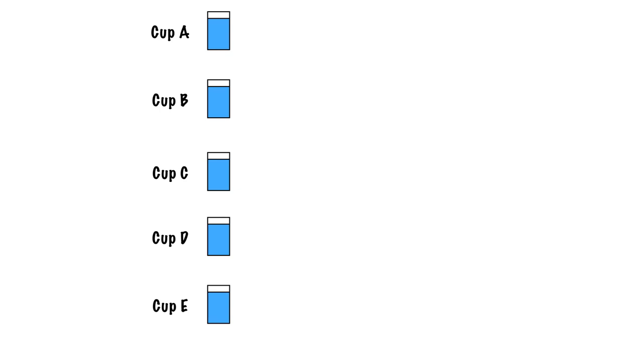A great place to start is with these different cups. We have cup A, B, C, D, and E. Each one of these cups is going to have a different temperature. We're going to first present a reference cup — in this case we're going to use cup C as our reference point, and it's going to be around room temperature. Cup B and A are going to be above room temperature, and cup D and E are going to be below room temperature.